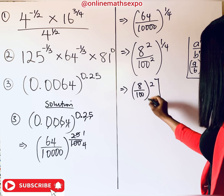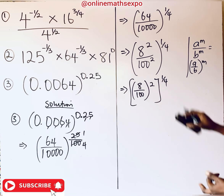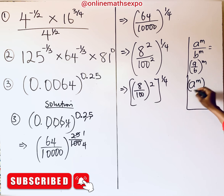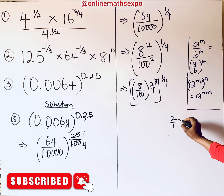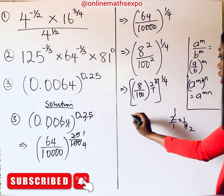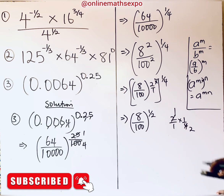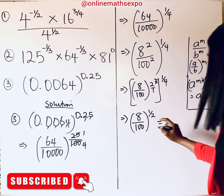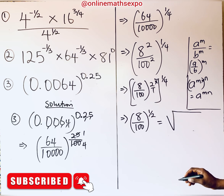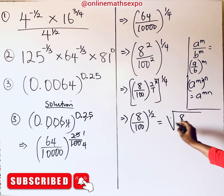Remember the rule: when you have a to the power of m raised to the power of n, you simply multiply the powers to get a to the power of m×n. So here: 2 over 1 times 1 over 4 gives 2 over 4, which simplifies to 1 over 2. We now have 8 over 100 raised to the power of 1 over 2. Using the denominator to form the root, denominator 2 means square root — so we have square root of 8 over 100.